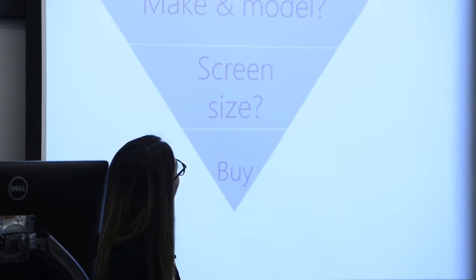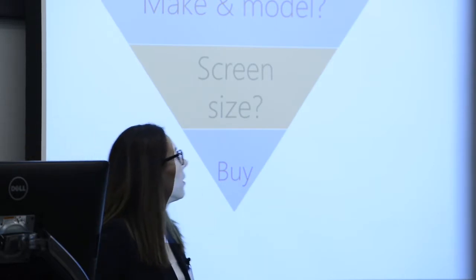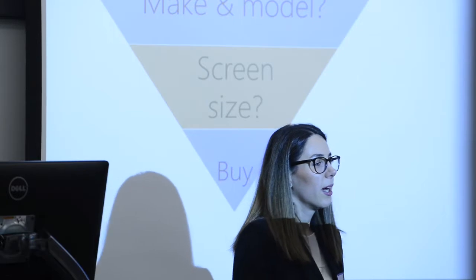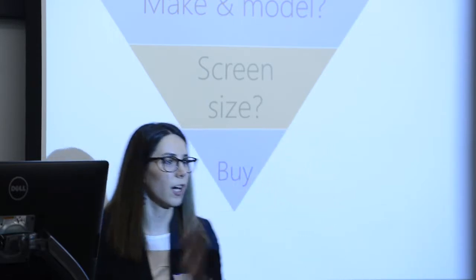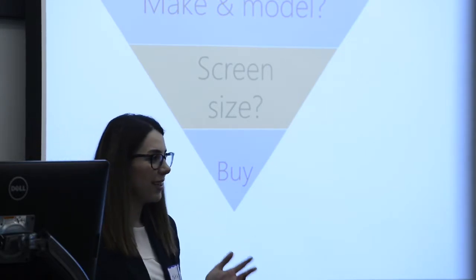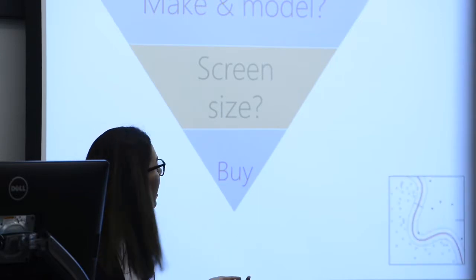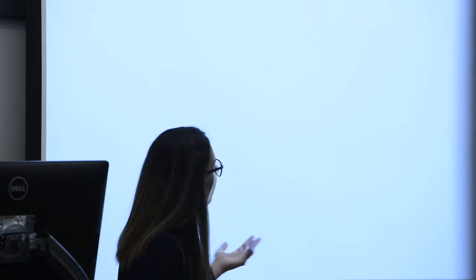For example, think about a sales funnel optimization use case — say a client wants to predict whether a customer will go with a 13.5-inch or 15-inch Surface Book screen. That's a classification problem; the only thing you need to know is that it's a classification problem, nothing more. Your data might contain different types of variables: numerical, categorical, some text, and some time-based variables.